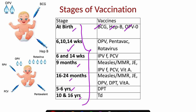At 6 and 14 weeks, we need to give OPV, Pentavalent, and Rotavirus. Rotavirus has only 3 doses, but Pentavalent and OPV have a booster at 6 and 24 months, and one more booster at 5 to 6 years. So this group will be given at 6 and 14 weeks.